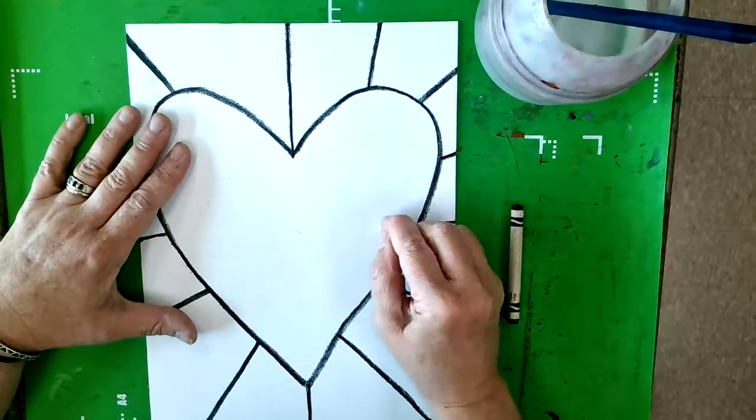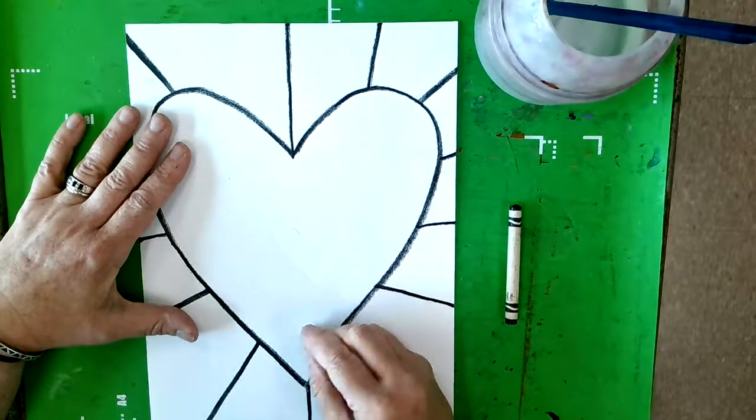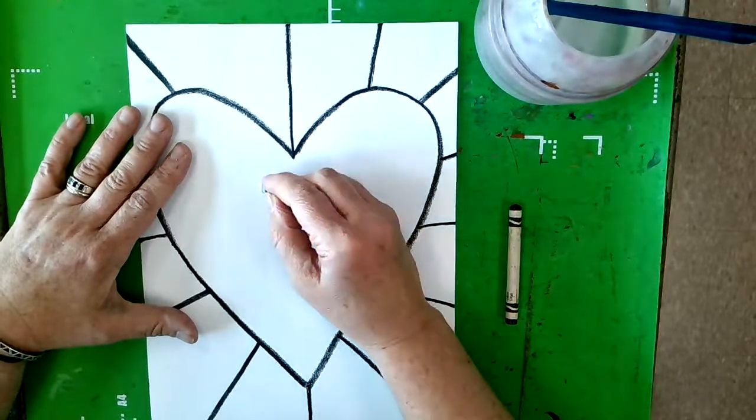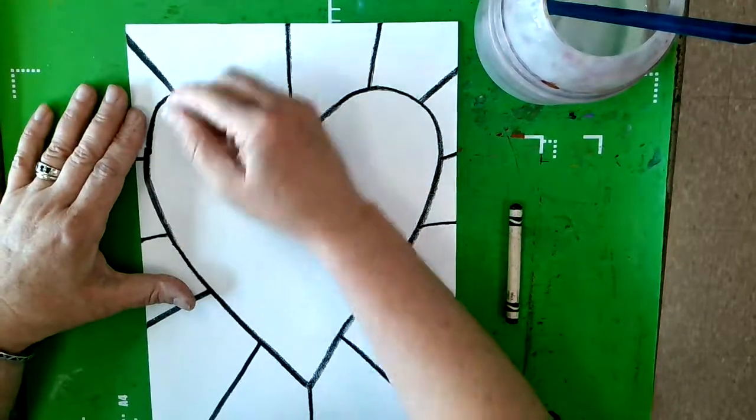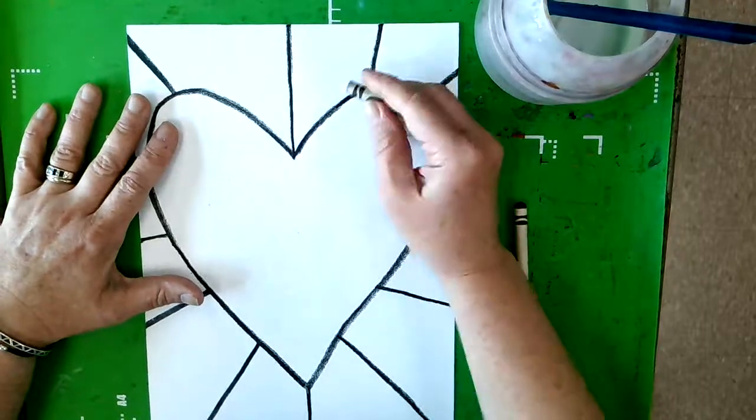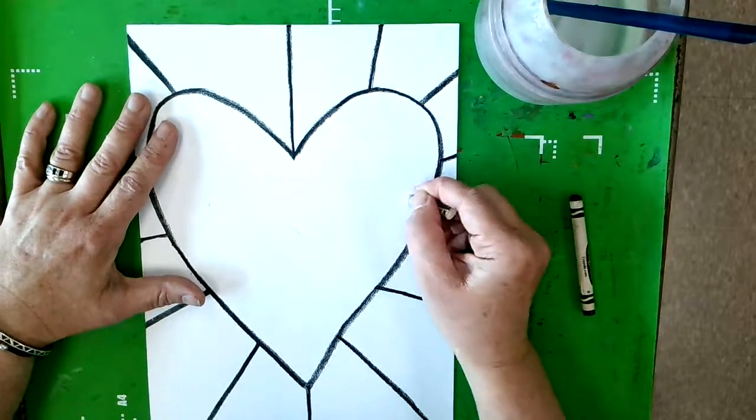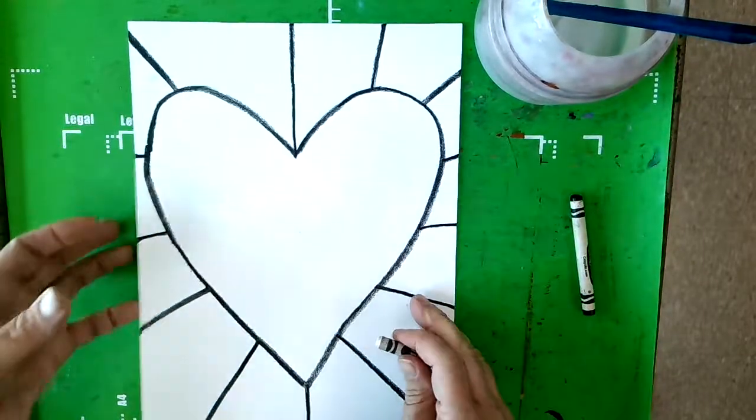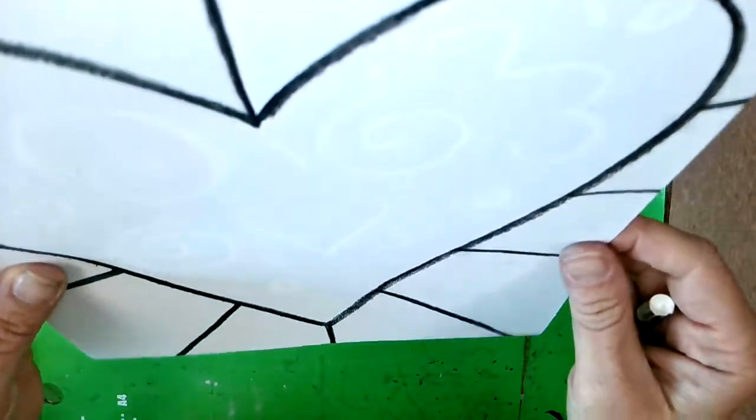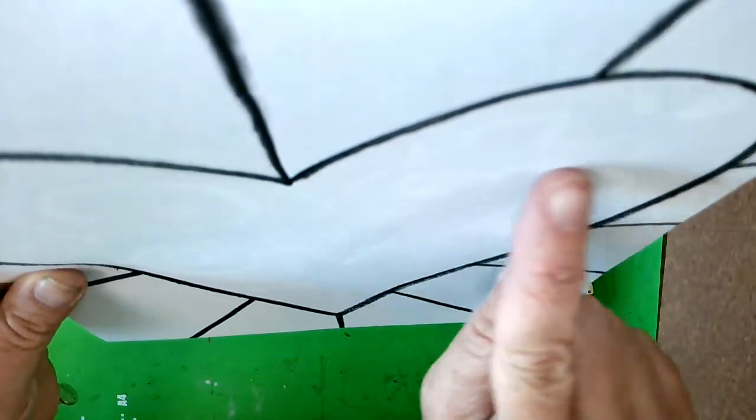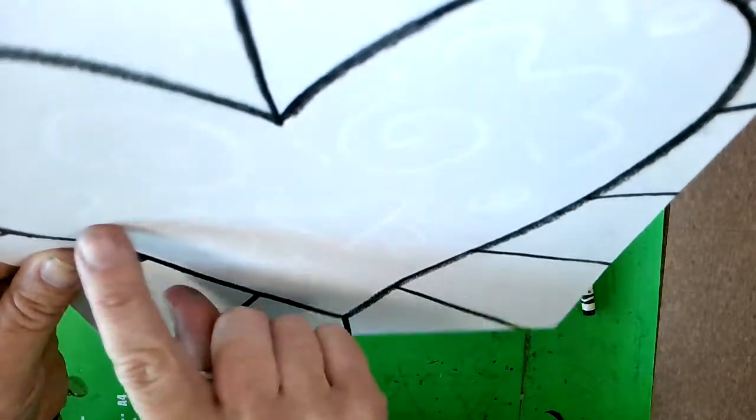I'm putting swirly lines, wavy lines, more little hearts. You could even write your name in here somewhere like a secret message to be decoded. So all over, I'm going to draw some lines. Now, if you look close, you can kind, can you see it? I can see it a little bit.